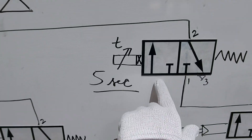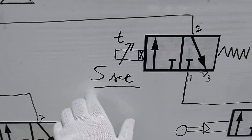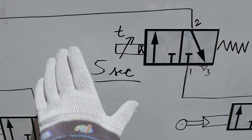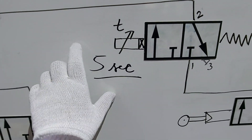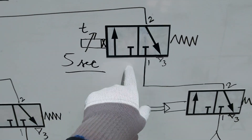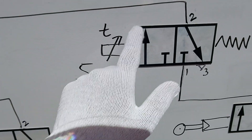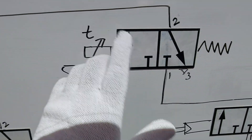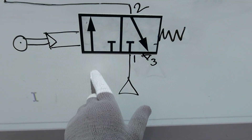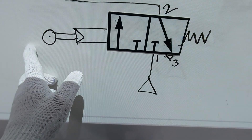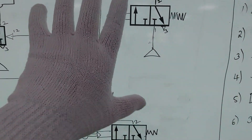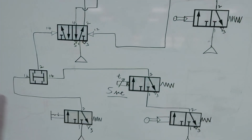We also have a timer — set to five seconds for now, though the time delay depends on the process. This is the 3x2 wave timer symbol, which has an arrow and the letter T. And here is the roller, a 3x2 roller, actuated by physical contact. Note that the positions of the rollers in the diagram are not their actual physical positions — this is just a schematic diagram.